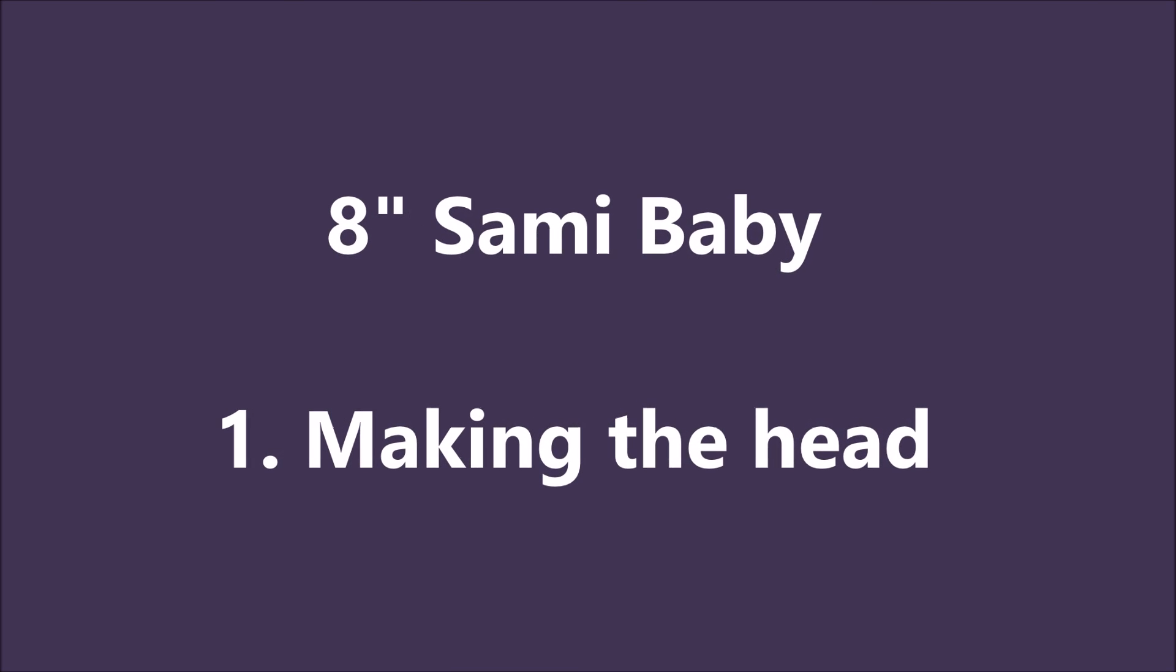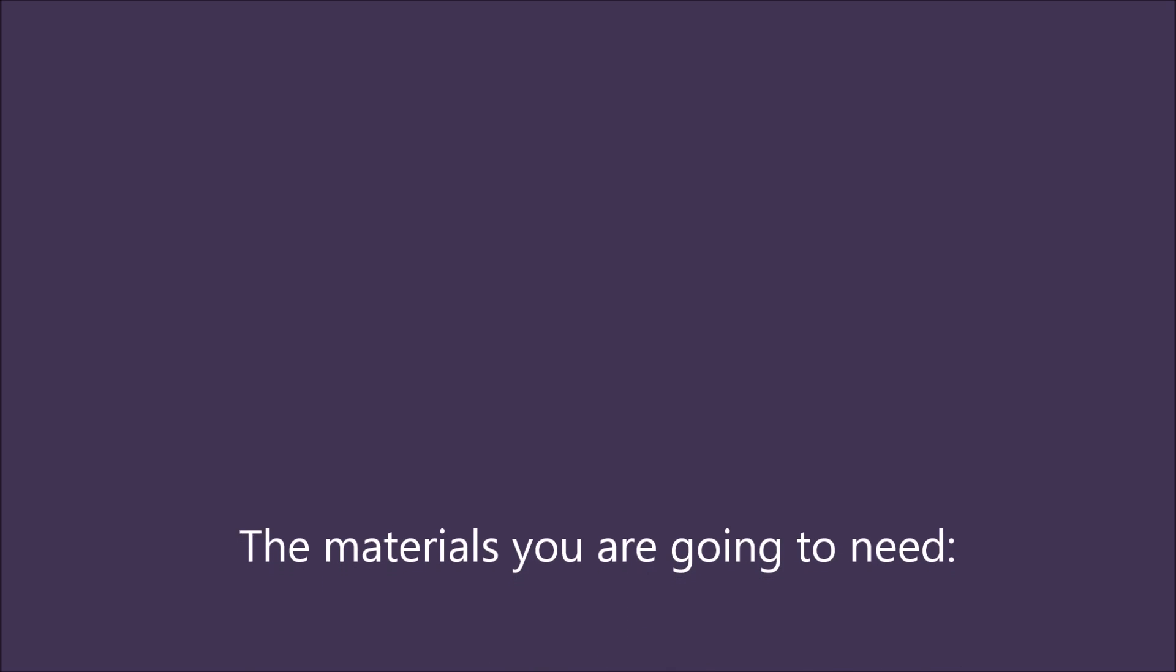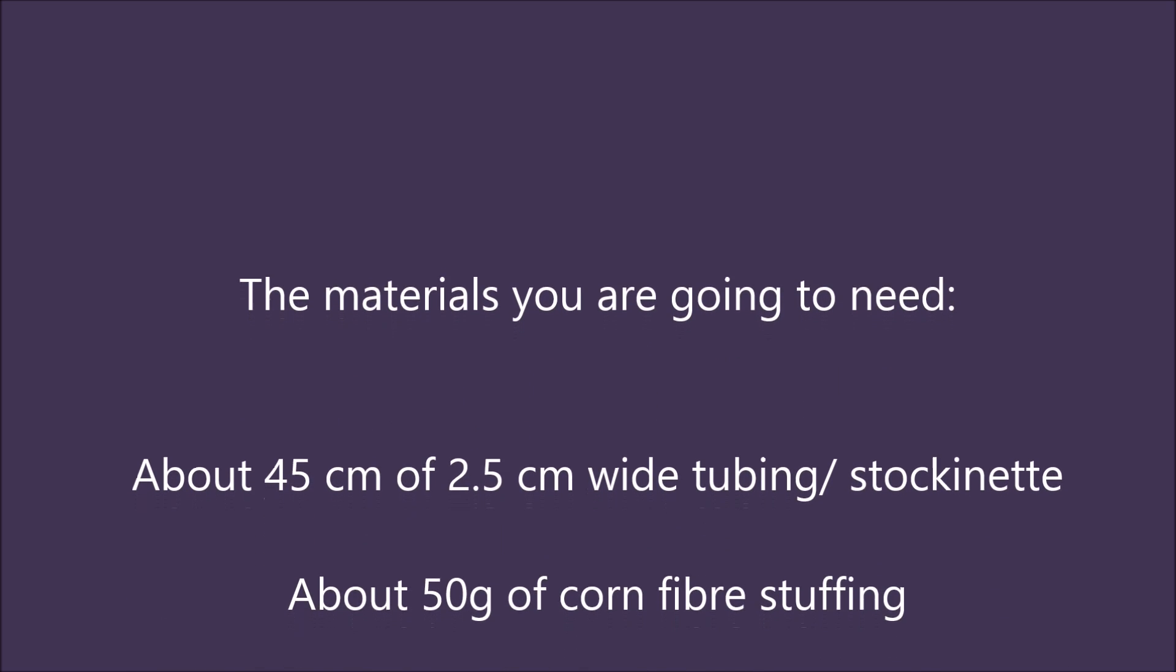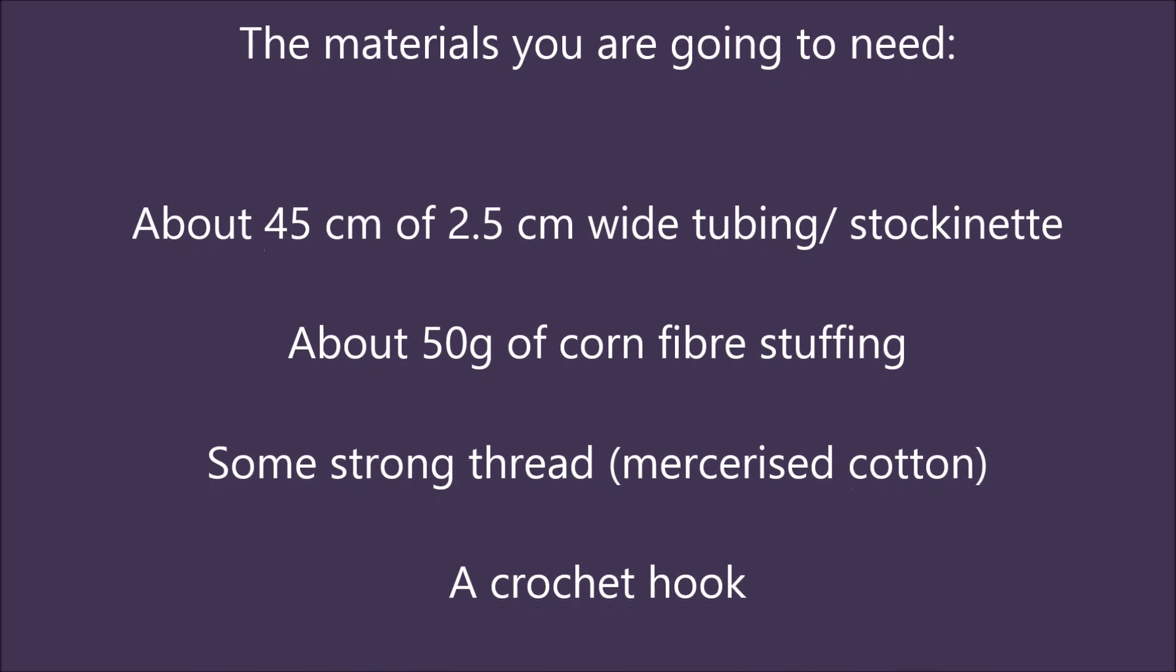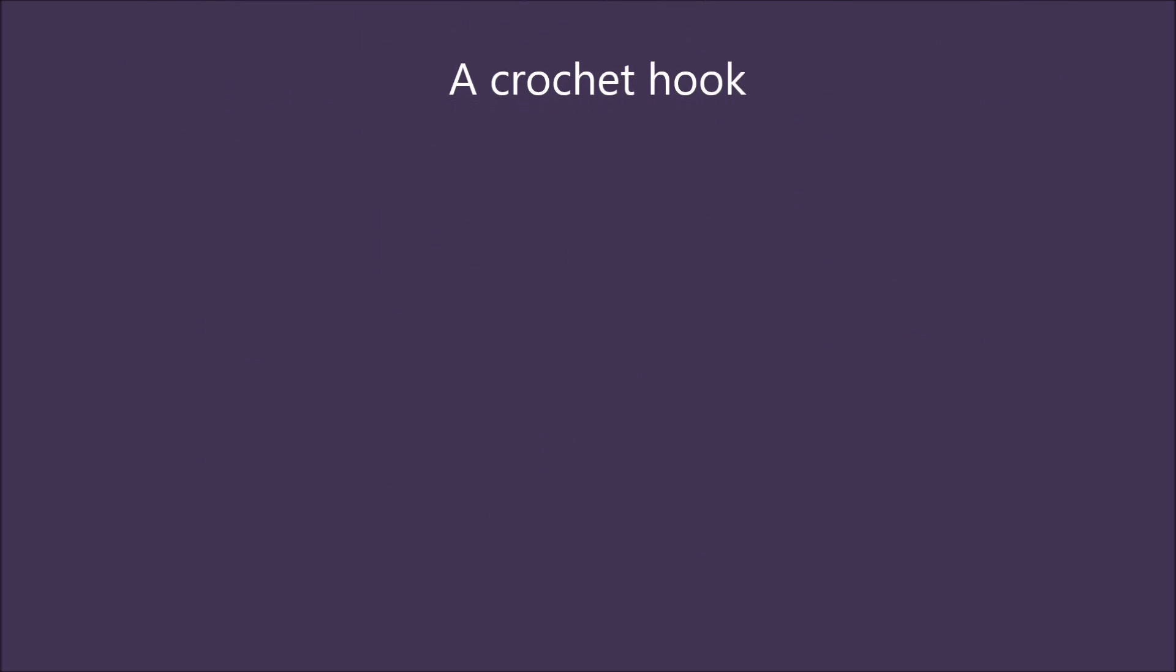Hi and welcome to this tutorial. I hope you enjoy making this cute little baby. Materials you are going to need are about 45 cm of tubing, about 50 grams of corn fiber, some strong thread and a crochet hook.